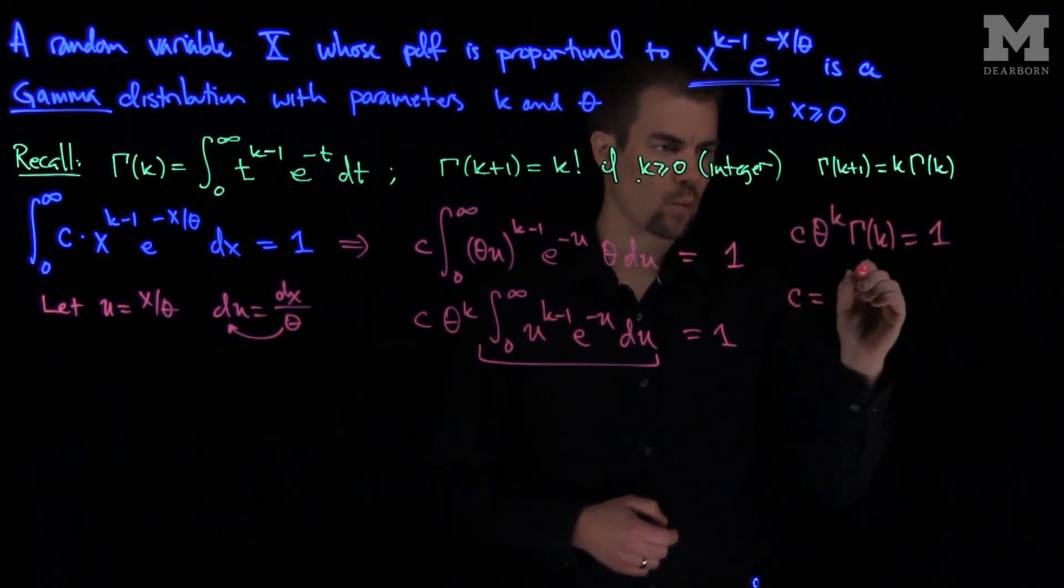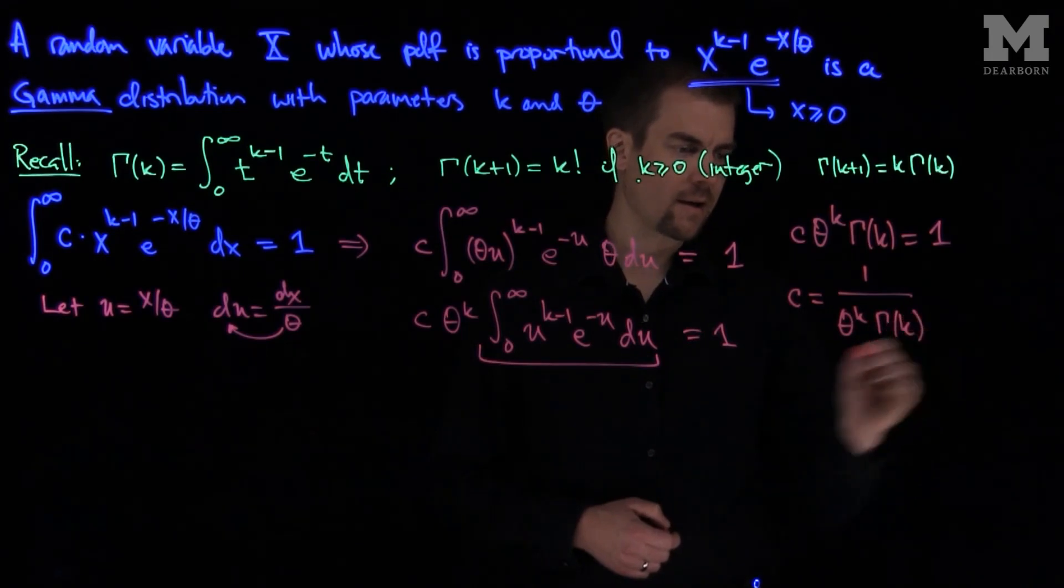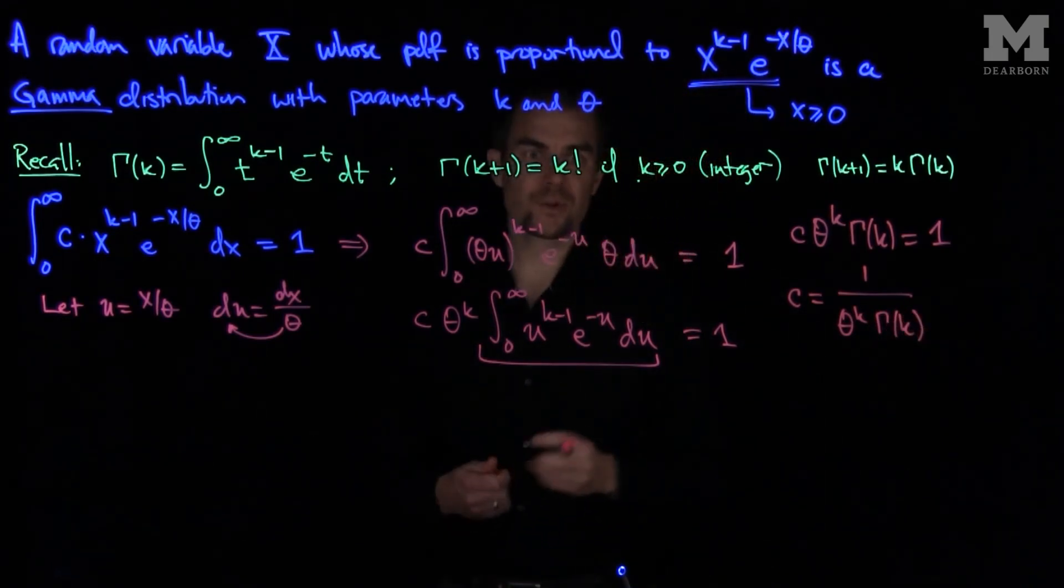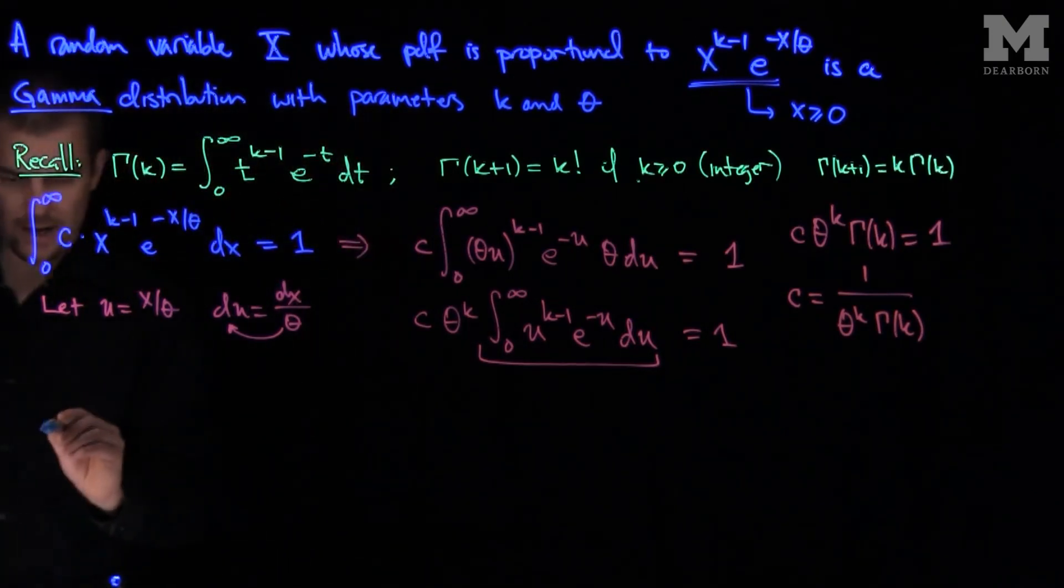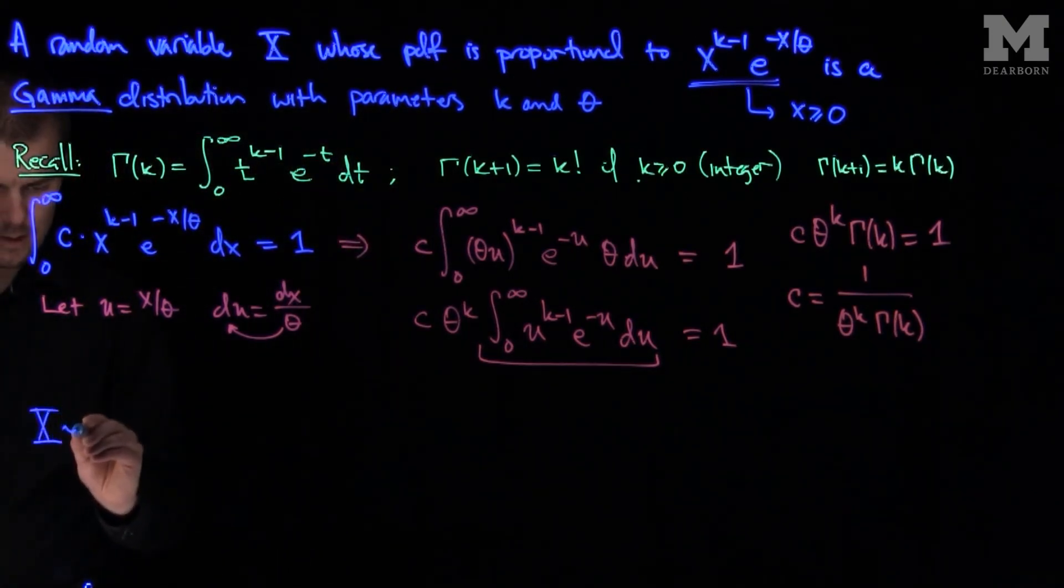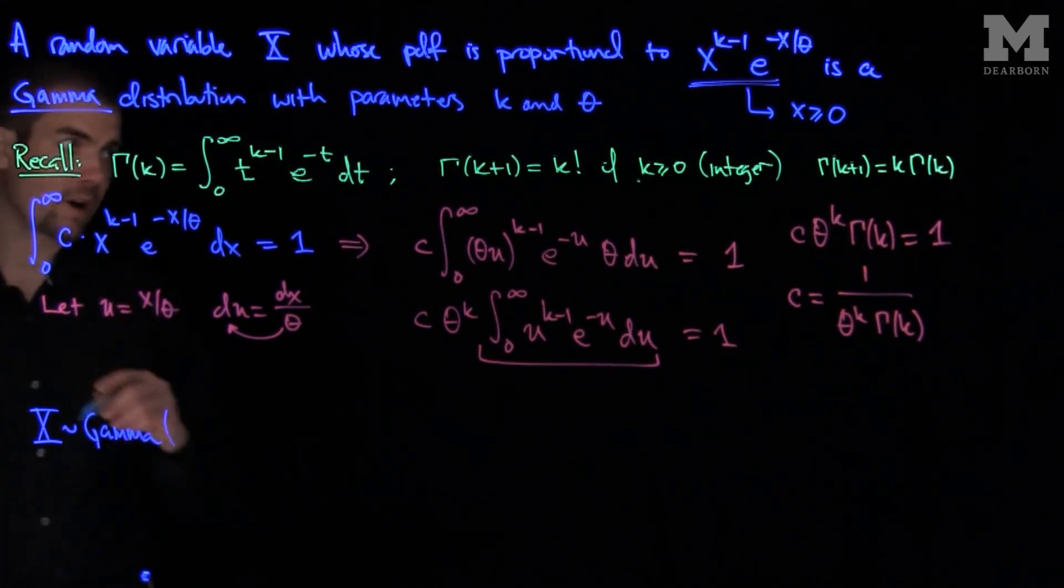And therefore our constant of proportionality is 1 over theta to the k gamma of k. And so hence we now have the PDF of this gamma random variable.